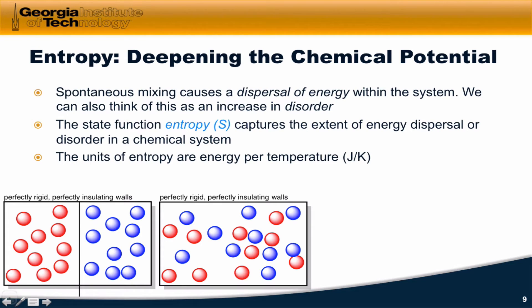The units of entropy are energy per temperature. So in particular, it's the amount of energy dispersed at a particular temperature that's the entropy. And we're noticing, at least in this case, that for the spontaneous process of two ideal gases mixing within an isolated system, ΔS is greater than zero.